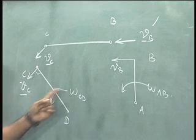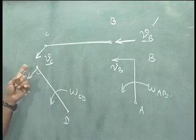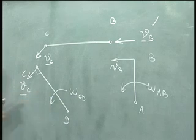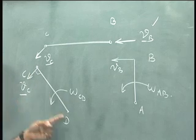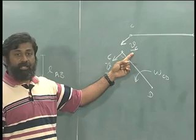What do I don't know? Since omega CD is not known, omega CD times the length is not known. Once I know omega CD, since I know the length I can find out the magnitude of VC.